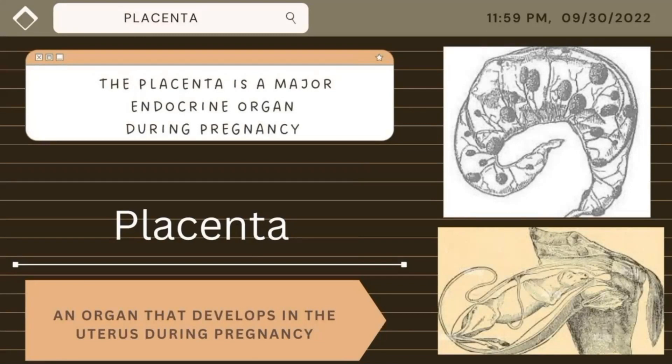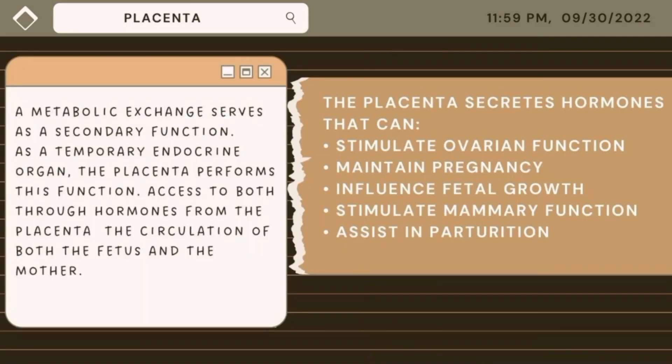The placenta is a major endocrine organ. During pregnancy, it is an organ that develops in the uterus. Metabolic exchange serves as a secondary function. Through hormones from the placenta, it accesses the circulation of both the fetus and the mother. The placenta secretes hormones that can stimulate ovarian function, maintain pregnancy, influence fetal growth, stimulate mammary function, and assist in parturition.